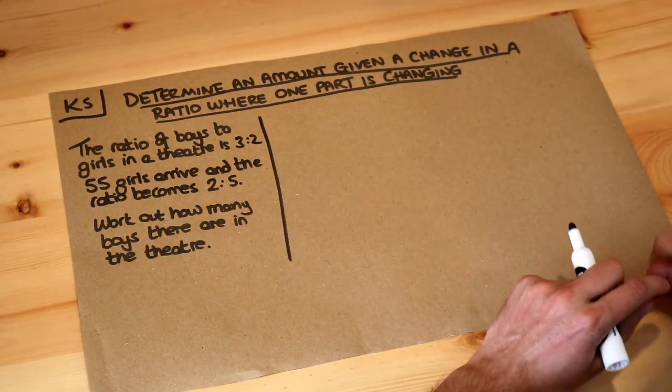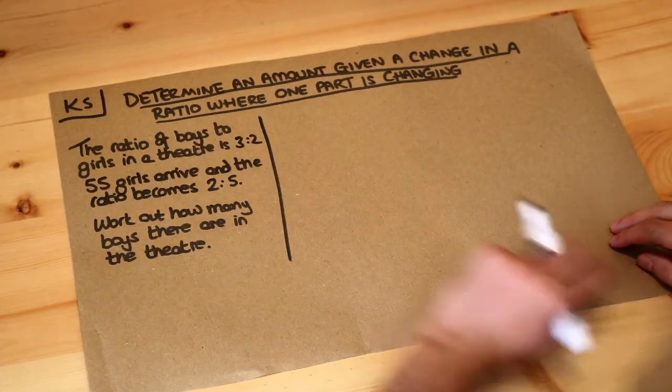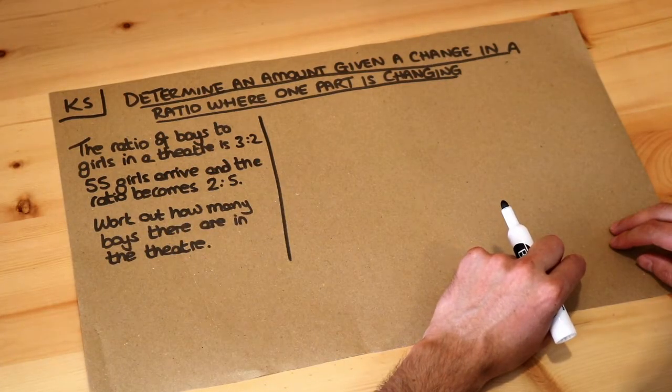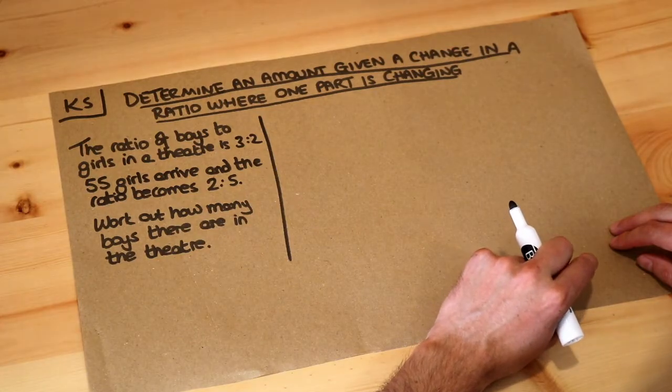Let's look at the question: the ratio of boys to girls in a theatre is 3 to 2. 55 girls arrive and the ratio becomes 2 to 5. Work out how many boys there are in the theatre.